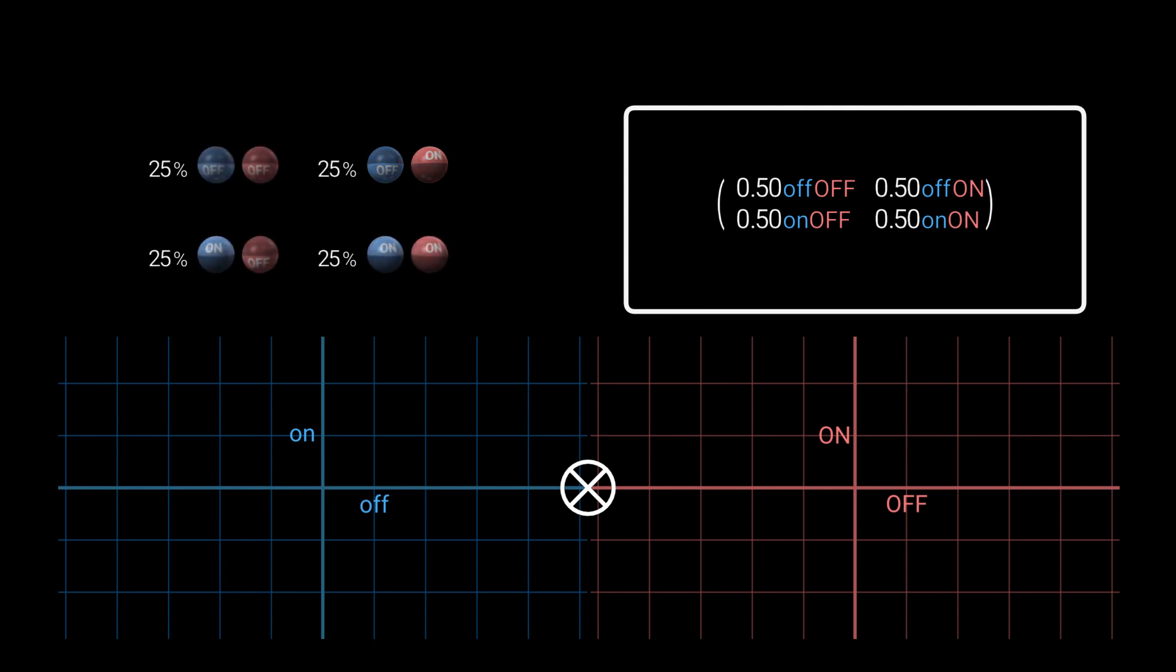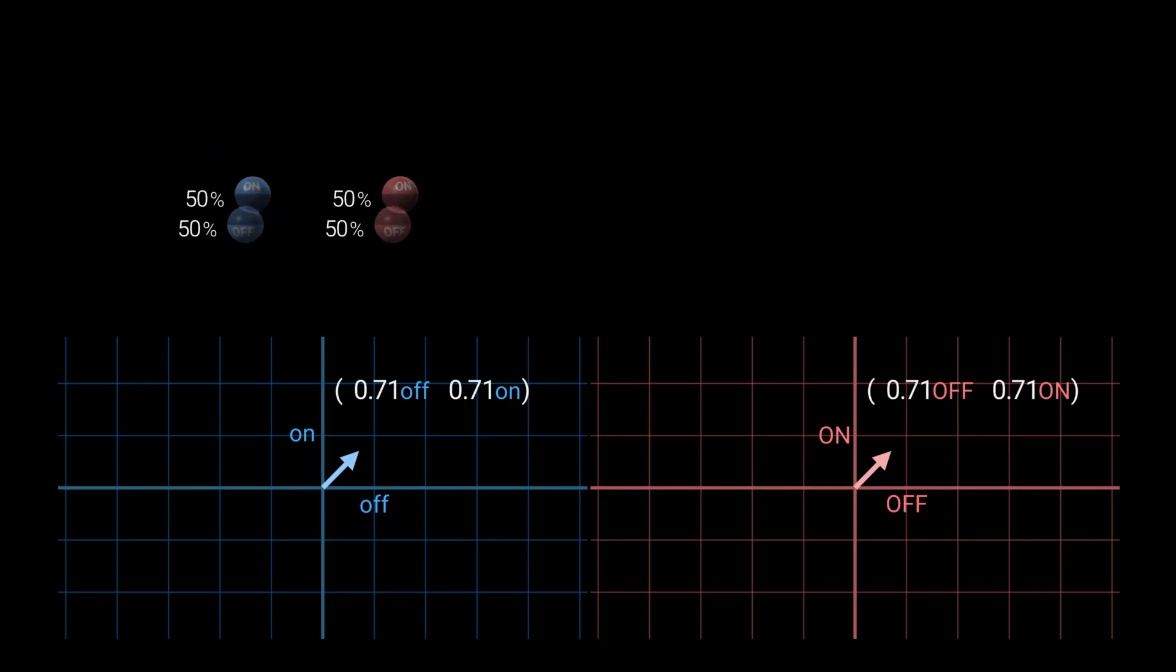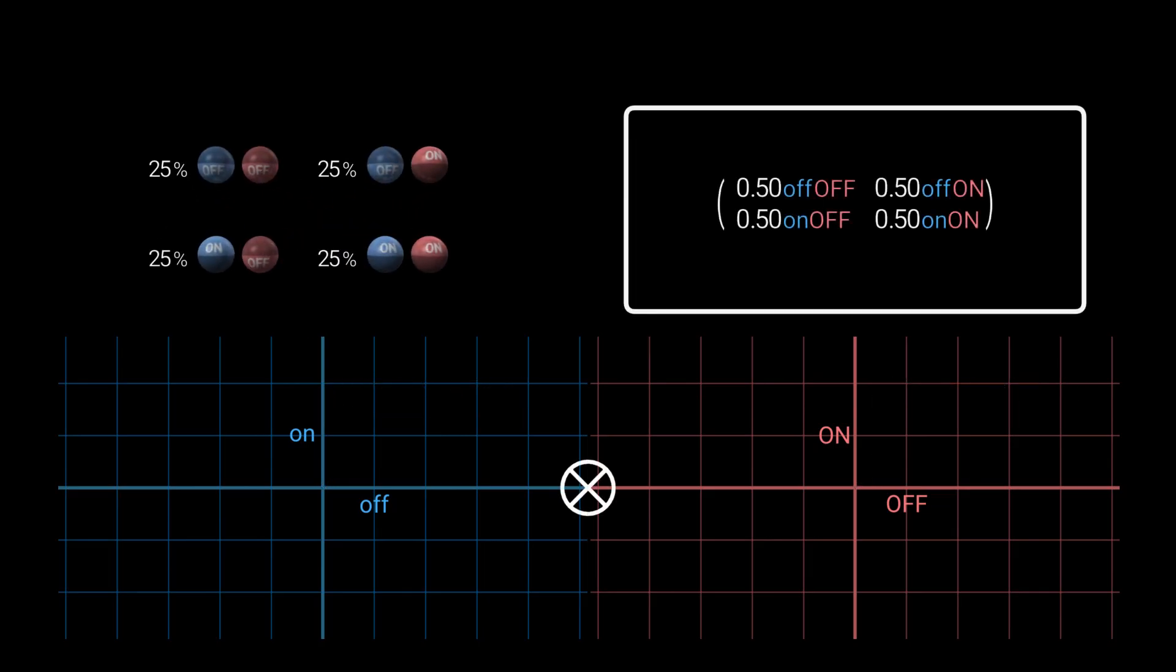And here is a second example. This one specifies all four combinations have equal probability. This is also a simple tensor, the product of these two vectors. So again, we can treat this as two separate qubits, each in 50-50 superposition. Because they are separate, they are also independent and there is equal probability for every combination. Or we can treat this as a single system with a state that specifies the same thing.